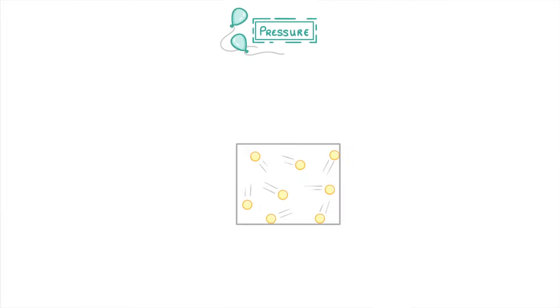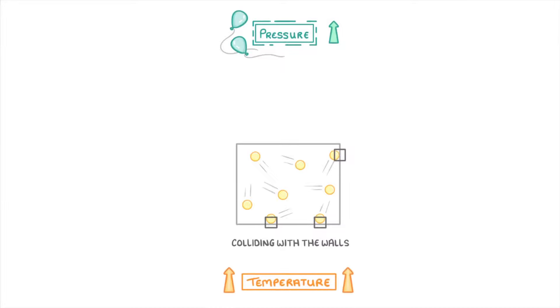We saw in the last video that pressure in gases is caused by gas particles colliding with the walls of the container, and that we can increase the pressure by increasing the temperature, increasing the number of particles, or decreasing the volume.